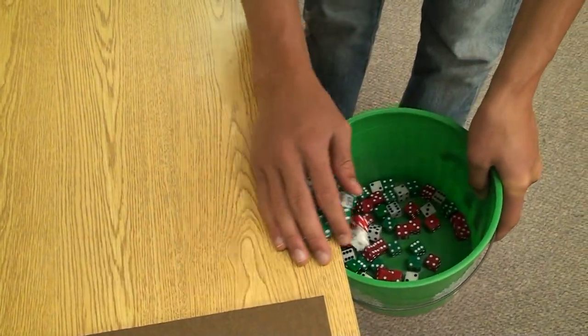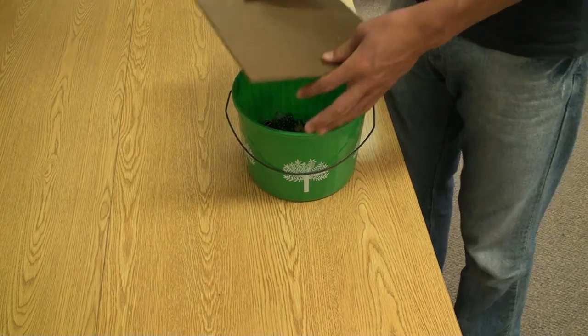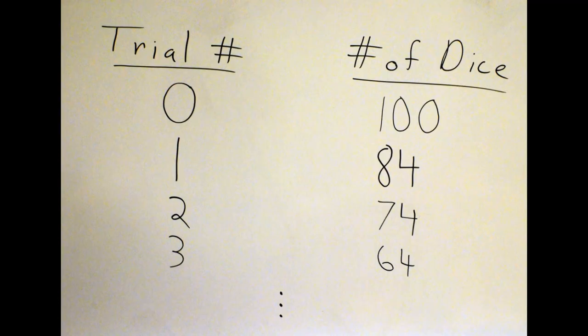Again, add the results from all groups. Record the number of remaining dice versus trial number.